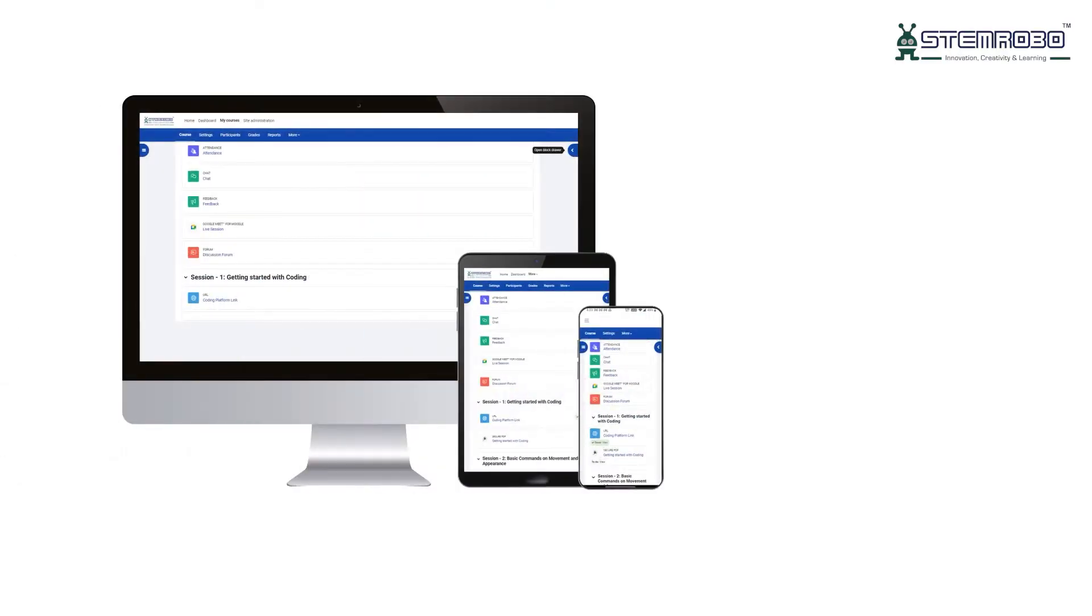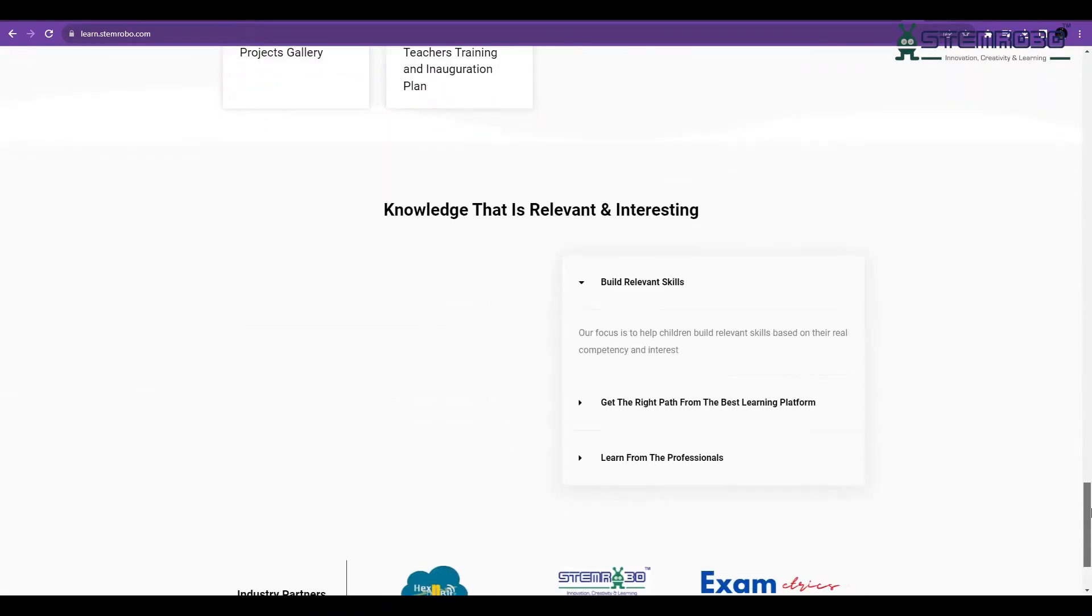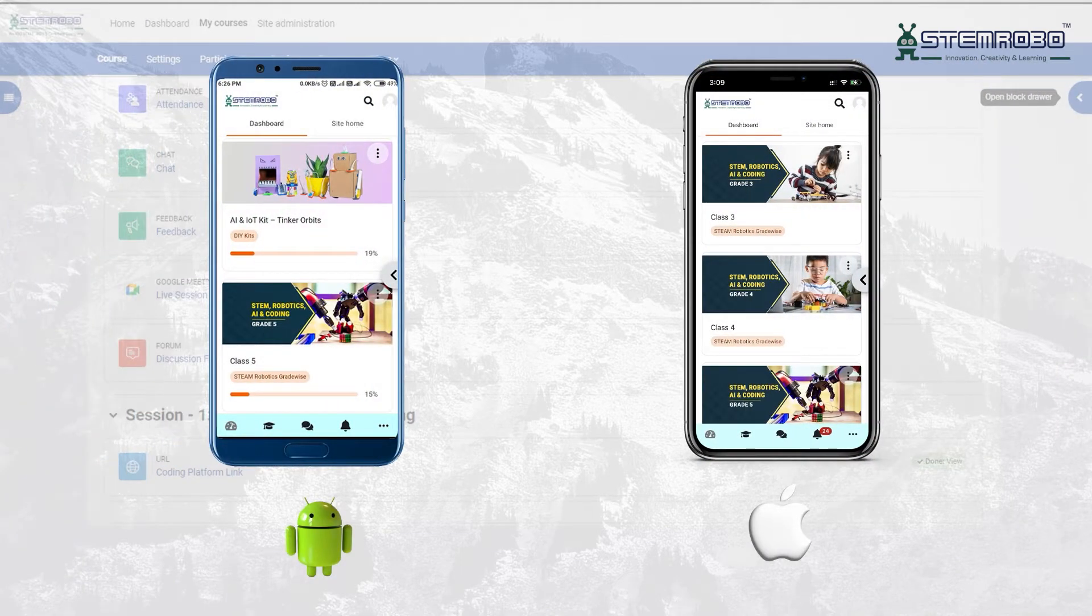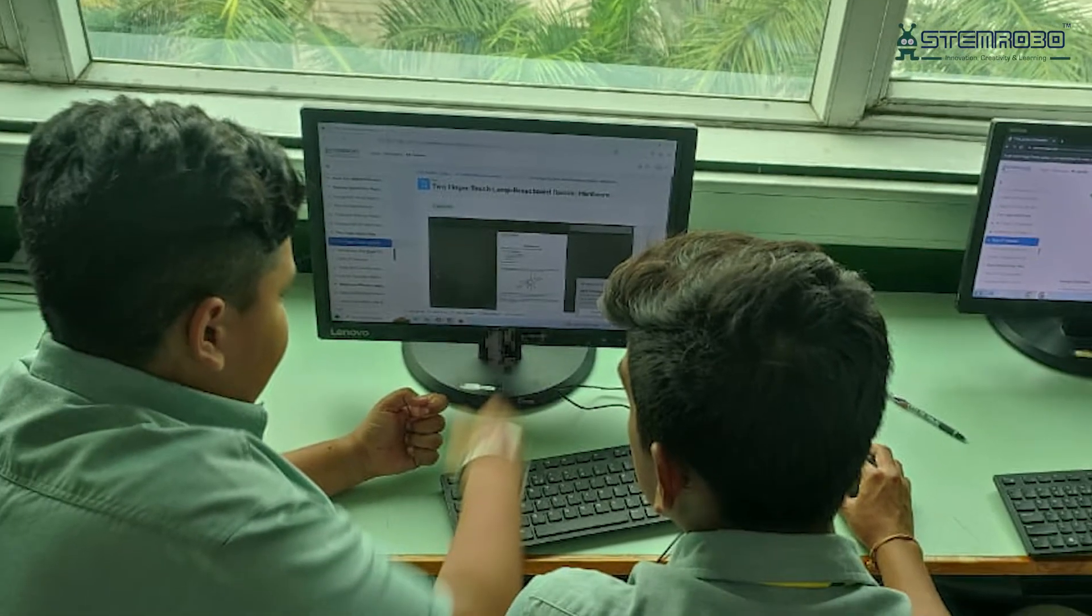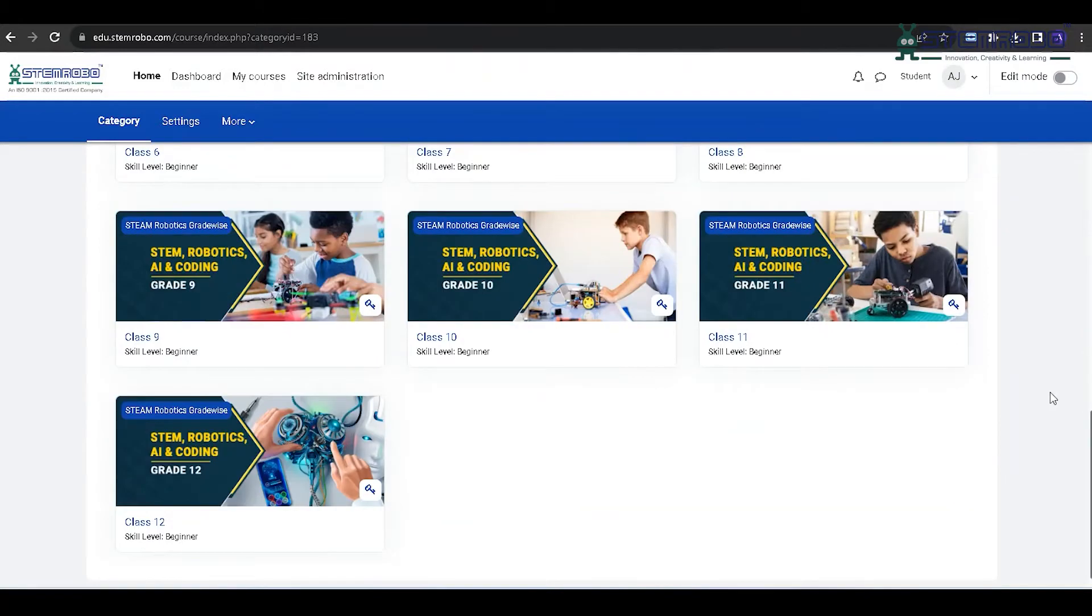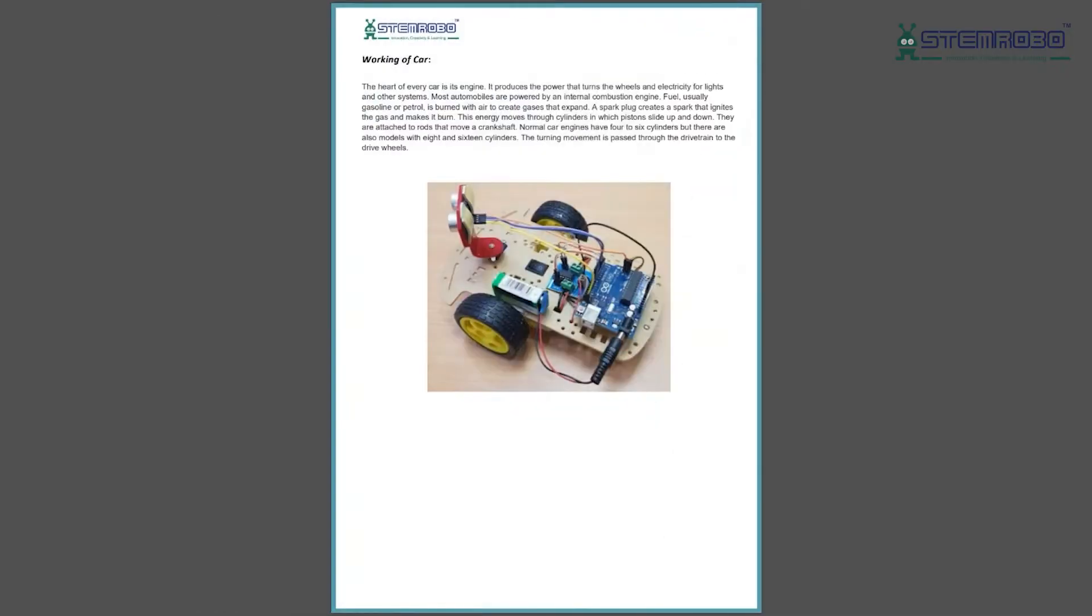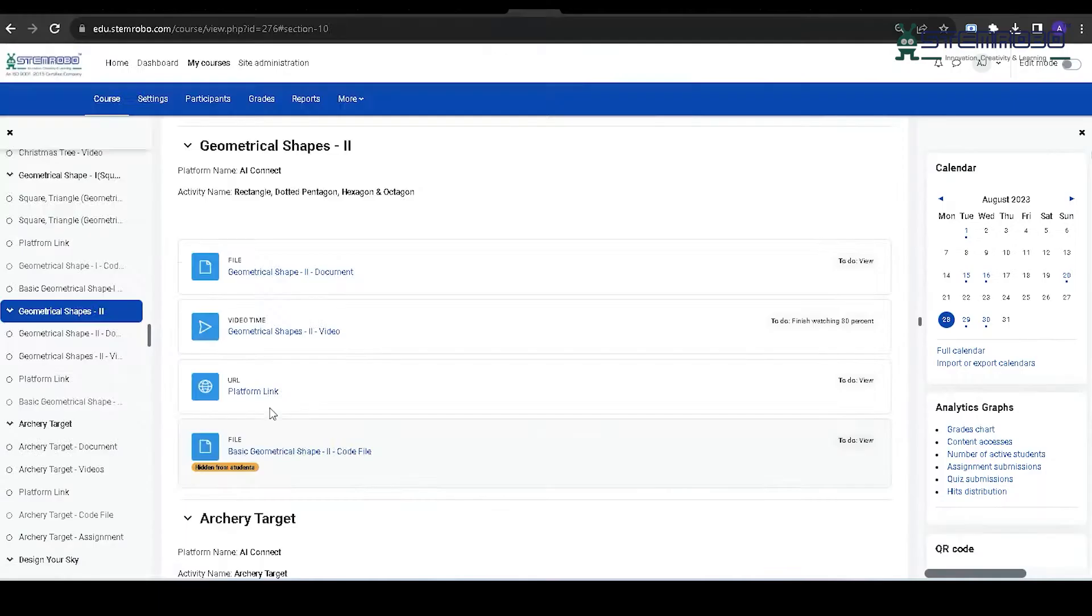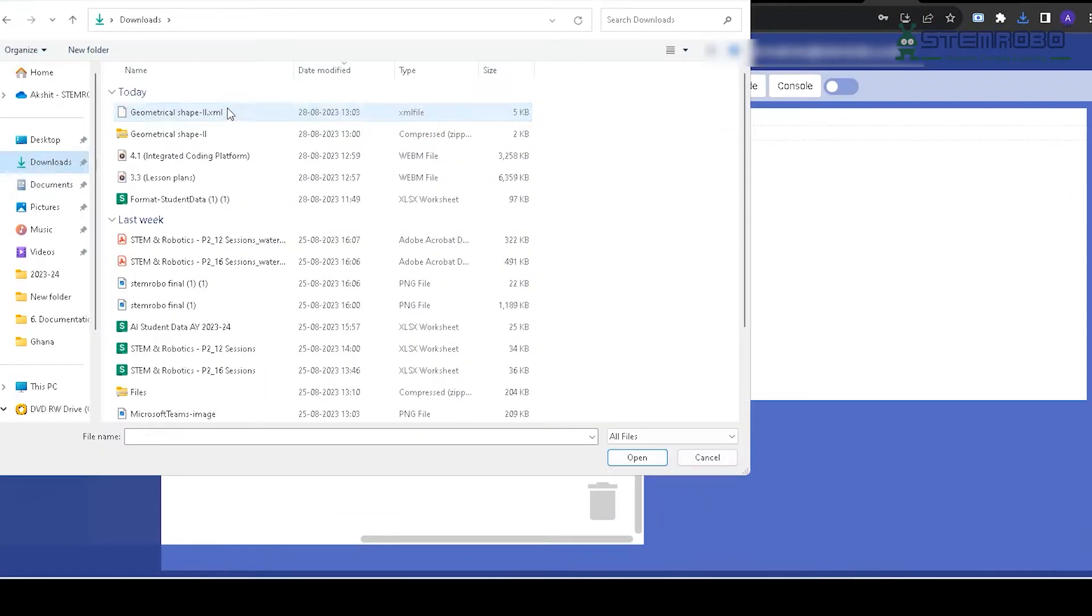To bring these immersive programs to schools, STEM Robo leverages STEM Robo Learn LMS, accessible through learn.stemrobo.com on the web and the STEM Robo Learn app for Android and iPhone. STEM Robo Learn LMS offers an array of features, from world-class content curated by STEM Robo experts to a progressive grade-wise curriculum, session-wise planners, and lesson plans for teachers. It's all at your fingertips with an integrated coding platform and code files for teachers—hands-on coding education becomes seamless.